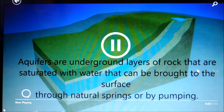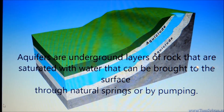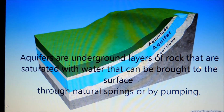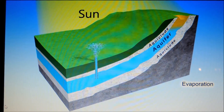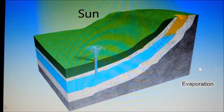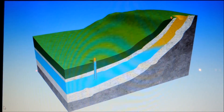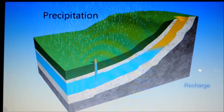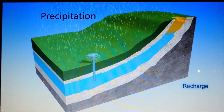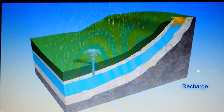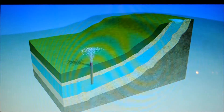Aquifers are underground layers of rock that are saturated with water and can be brought to the surface through natural springs or by pumping. The sun heats the ground, which causes the aquifers to decrease in groundwater as it evaporates. Then precipitation refills the aquifers so you get more groundwater, and well pumping brings the water even higher to the surface.